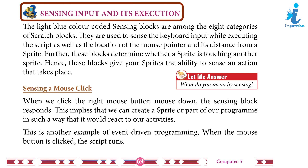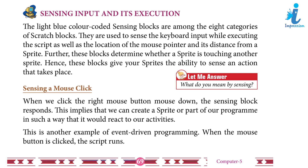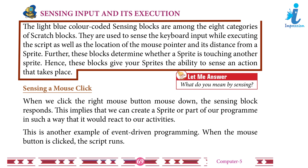Sensing input and its execution: The light blue color-coded sensing blocks are among the eight categories of Scratch blocks. They are used to sense keyboard input while executing the script, as well as the location of the mouse pointer and distance from the sprite. These blocks also determine whether a sprite is touching another sprite, giving sprites the ability to sense an action that takes place.